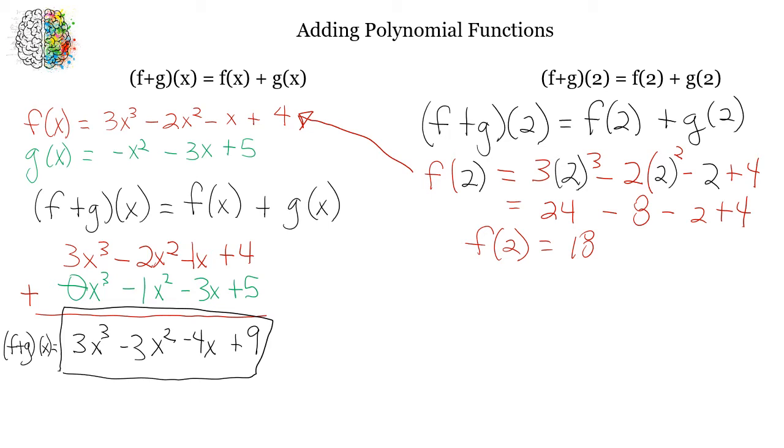So now I'm going to do the same thing. But this time I'm going to do that with the g of x. And I'm going to plug in a 2 everywhere that I have an x. So that's going to be a minus 2 squared minus 3 times 2 plus 5. So that is going to equal 2 squared, which is 4 minus 3 times 2, which is 6, plus 5, which is going to equal a negative 5. So g of 2 equals negative 5.